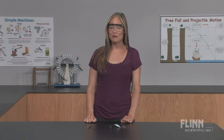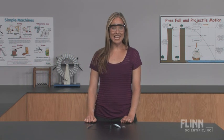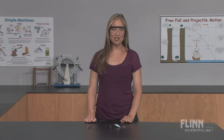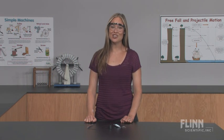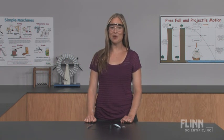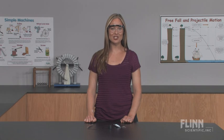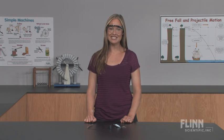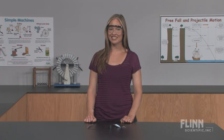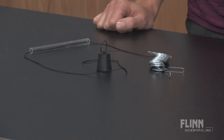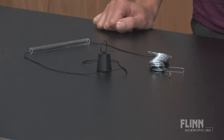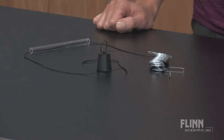Give the concepts of orbital speed and centripetal force a whirl in your classroom with the Orbital Speed Demonstration Kit from Flynn Scientific. Use this simple demonstration to answer the question: how do gravitational forces and the radius of an orbit affect orbital speed?